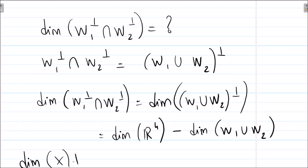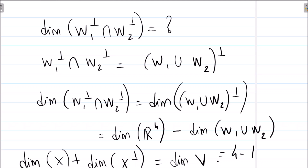Recalling that for any subspace X, the dimension of X plus the dimension of X⊥ equals the dimension of the full vector space — because the vector space is always the direct sum of X and X⊥ — we get: dim((W1 ∪ W2)⊥) = dim(R⁴) − dim(W1 ∪ W2) = 4 − dim(W1 ∪ W2).